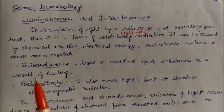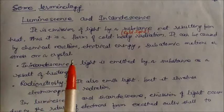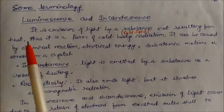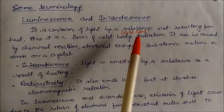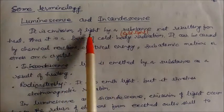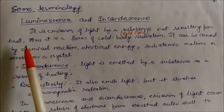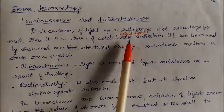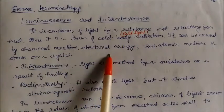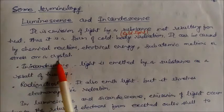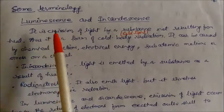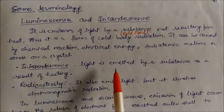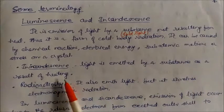Now we will see terminology associated with photochemical reactions. Luminescence is the emission of light by a substance not resulting from heat — it is a form of cold body radiation or cold light. It can be caused by a chemical reaction, electrical energy, subatomic motions, or stress on a crystal. Incandescence is light emitted by a substance as a result of heating — for example, a bulb. In luminescence, emission of light occurs due to the return of electrons from an excited outer shell to the ground state.